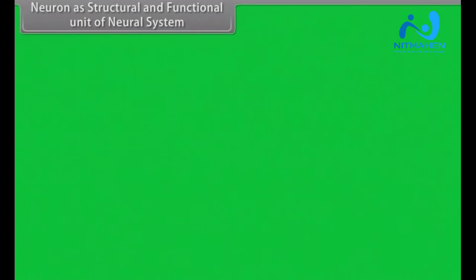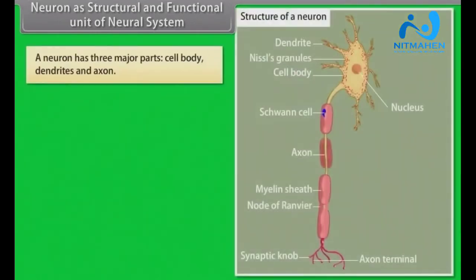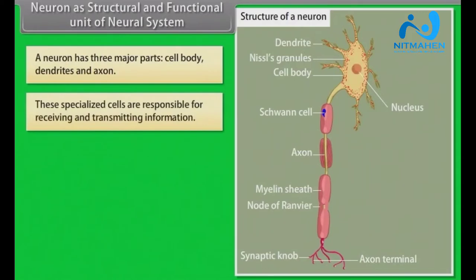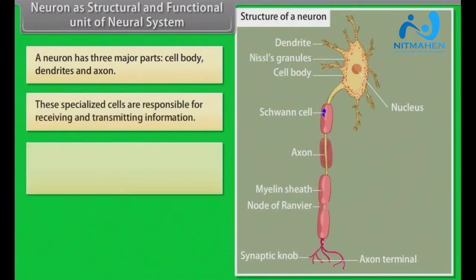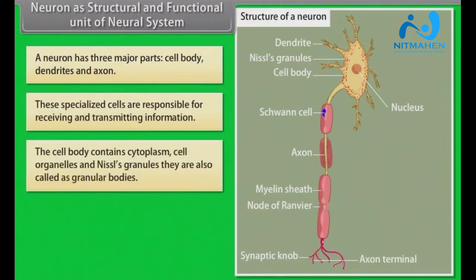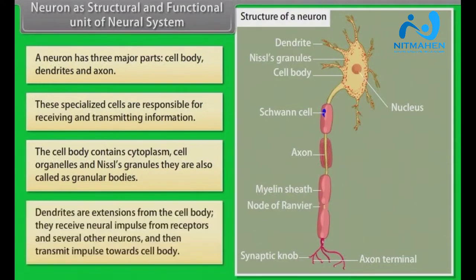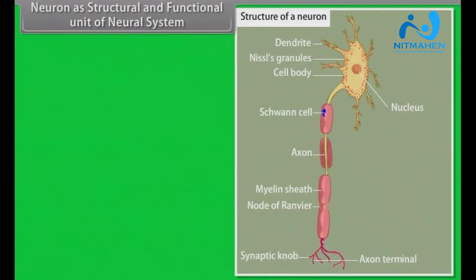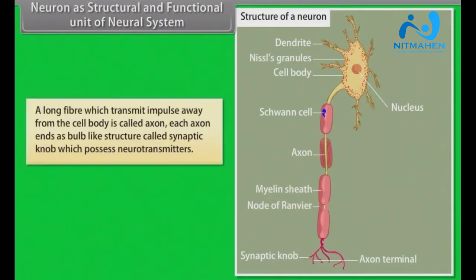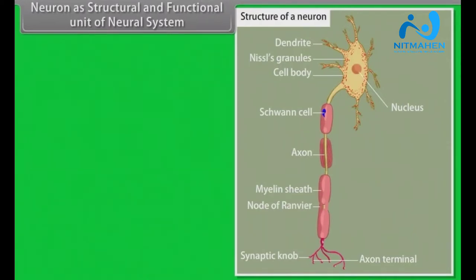A neuron has three major parts: cell body, dendrites, and axon. These specialized cells are responsible for receiving and transmitting information. The cell body contains cytoplasm, cell organelles, and Nissl's granules, also called granular bodies. Dendrites are extensions from the cell body; they receive neural impulses from receptors and other neurons and transmit impulses towards the cell body. A long fiber that transmits impulse away from the cell body is called an axon. Each axon ends as a bulb-like structure called a synaptic knob, which possesses neurotransmitters.